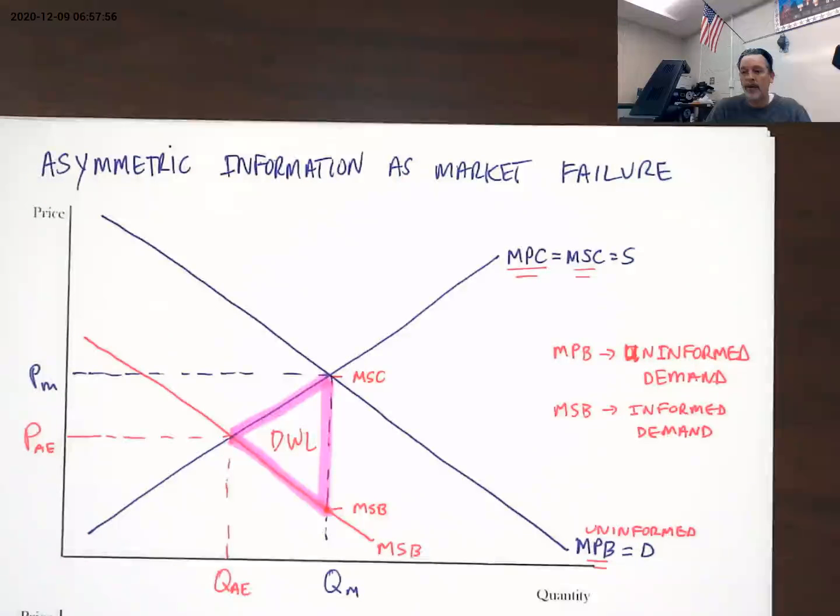You walk into a restaurant, they have a 99 as a health rating, you might be more comfortable hanging out in that restaurant and enjoying food there. The provision of information is generally the easiest way and the best way to limit asymmetric information problems.